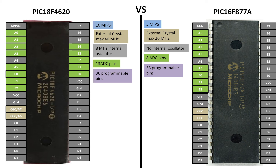The next thing is programmable pins. The PIC18F4620 has 36 programmable pins, while the PIC16F877A has only 33 programmable pins — which is still a huge number. These pins can be turned into digital input/output pins on both microcontrollers using programming software called MikroC for PIC. Both have 40 pins total and are replaceable with each other.